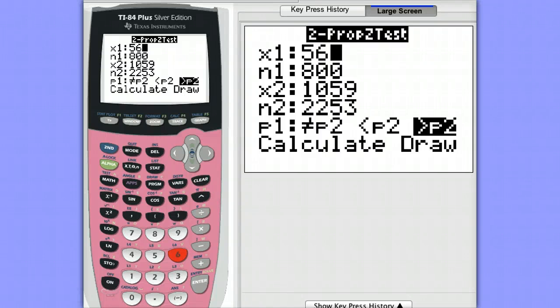Let's take a look at how to do a two-proportion z-test on our calculators. We're going to use the heart study data that's in our textbook.